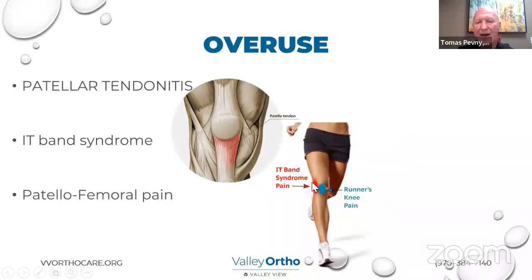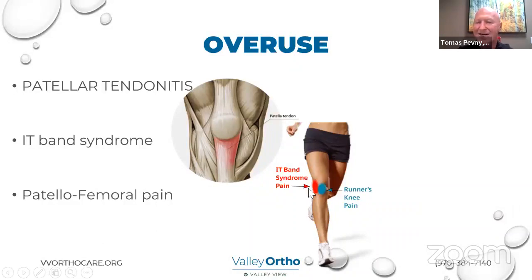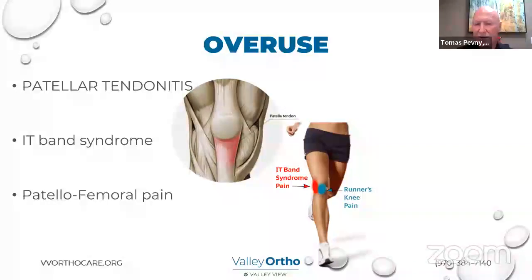Iliotibial band syndrome is more lateral pain — on the outside of the knee. The IT band goes from the pelvis down to just below the knee, attaching to the tibia. The femur bone flares at the knee. People with tight hamstrings, tight IT bands, who do a lot of repetitive activities such as running, biking, or hiking downhill may notice pinpoint pain on the outside of the knee — that's probably iliotibial band syndrome. Almost always, it responds to non-operative treatment.